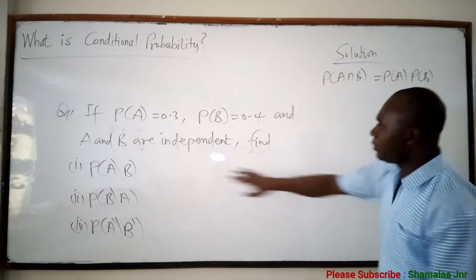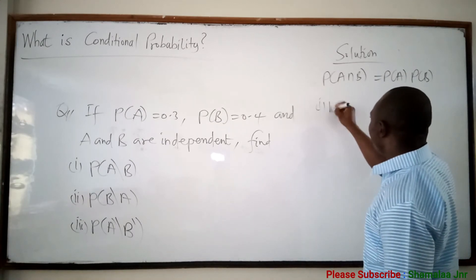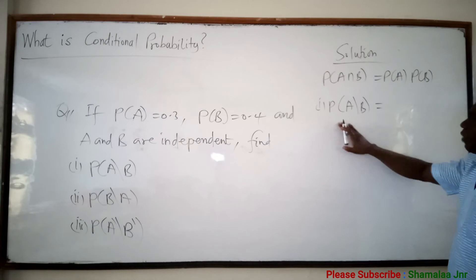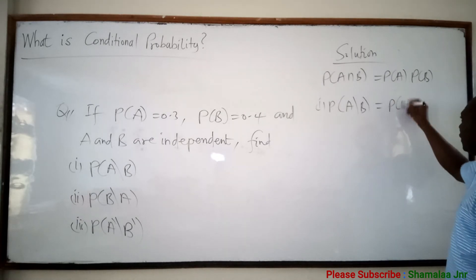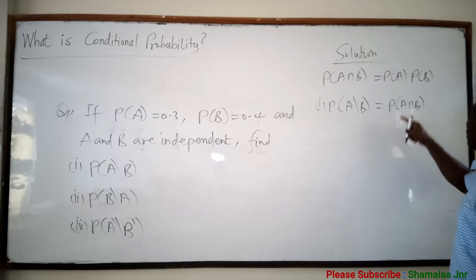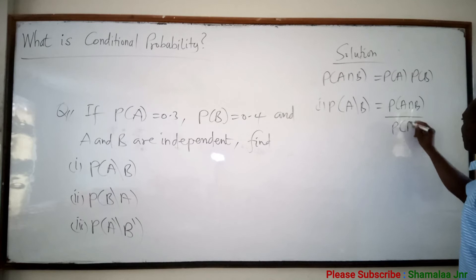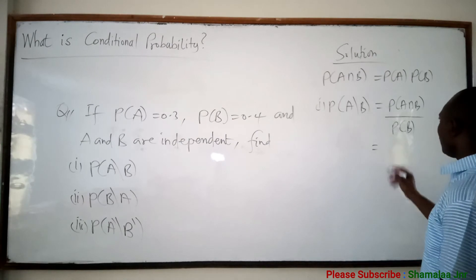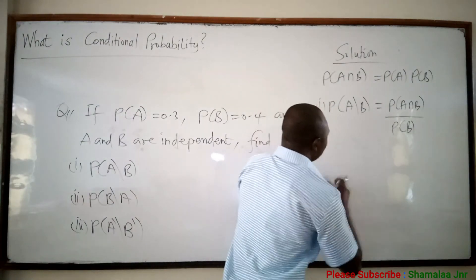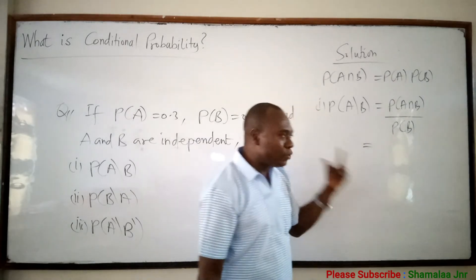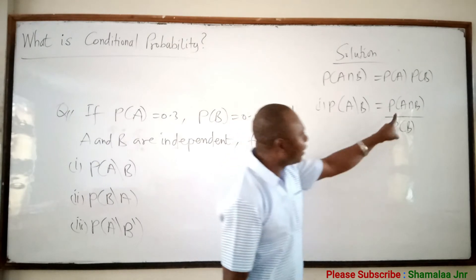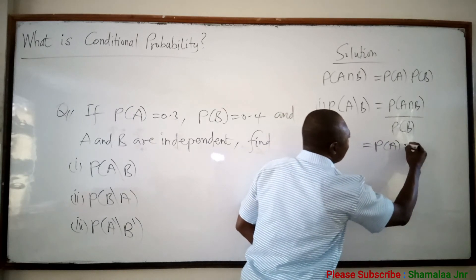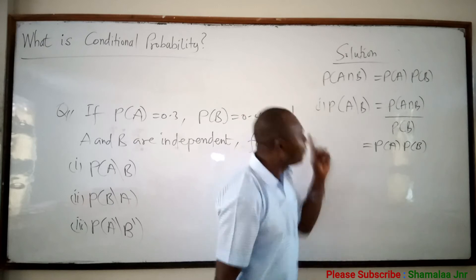Now let's look at what we have been given. We have been asked to find P of A given B. P of A given B is equal to P of A intersection B over P of B. Since A and B are independent, I can write this as P of A times P of B over P of B.